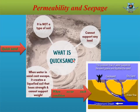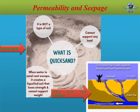What is quicksand? Quicksand is not a type of sand, but it is a flow condition. This type of sand cannot support any load. When water in sand can't escape, it creates a liquefied soil that loses strength and cannot support weight. When such a condition occurs, the underground water lifts towards the sand and liquefies it. This type of sand may be found near the sea and is often called Chorabali in Bangla.